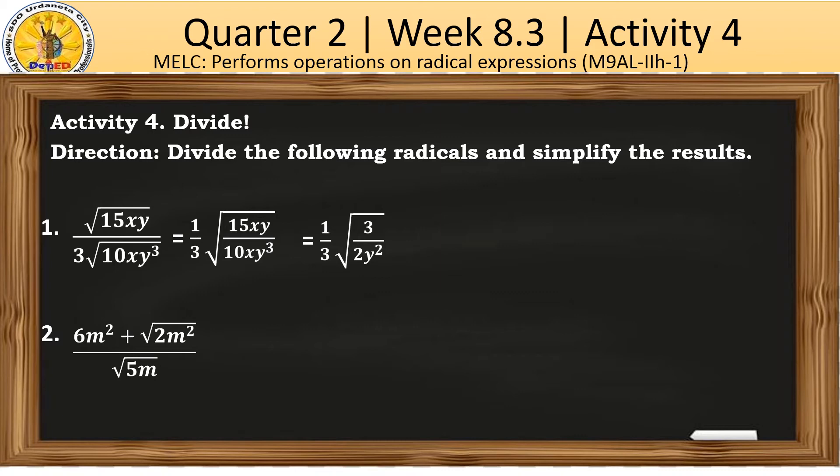The next step is to rationalize the denominator. I will be multiplying 3 over 2y squared by 2 over 2. Remember, our objective here is to make the denominator free from radicals. We will make the denominator a perfect square expression. Performing multiplication, you will end up with 1/3 square root of 6 over 2y.